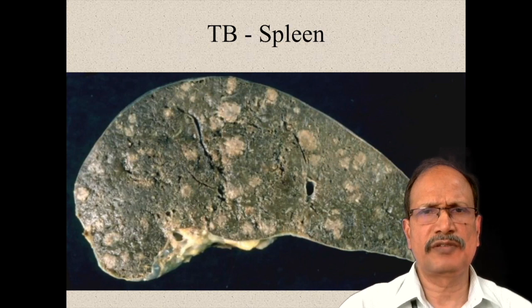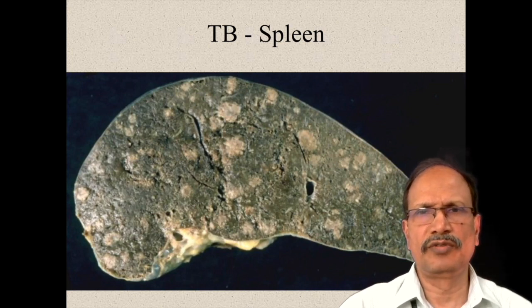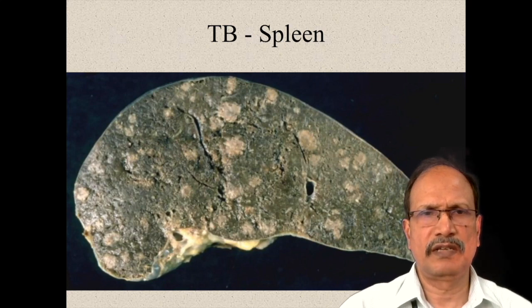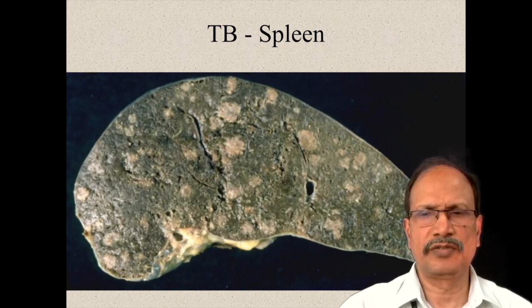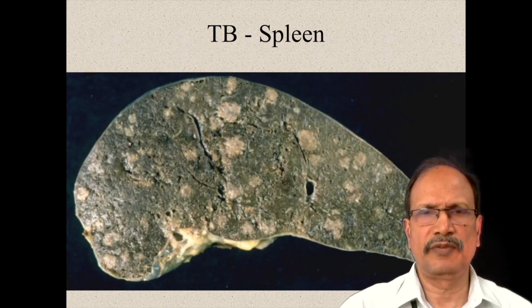The appearance of the spleen shows varied gray-white nodules of varying sizes spread across the spleen cut surface, probably due to the miliary variety of spread of tuberculosis.